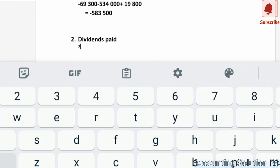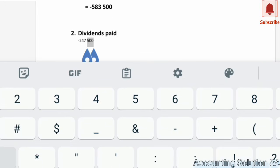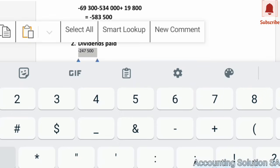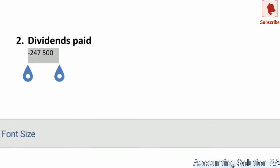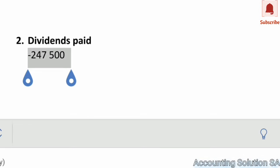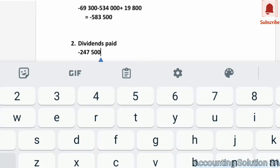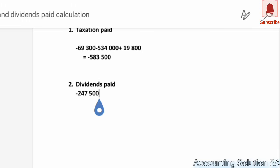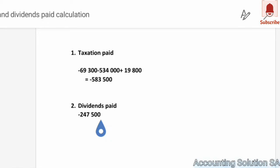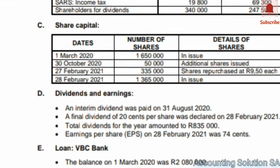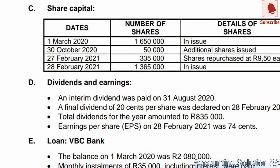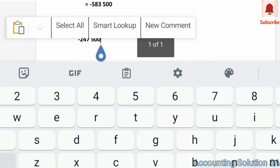The outflow for the opening balance is 247,500. Now let's check if there was a dividend paid during the year. From note D, relation number 3: a total dividend of 835,000 has been paid during the year — this is an outflow as it was paid in the middle of the year. So 835,000 is also negative.